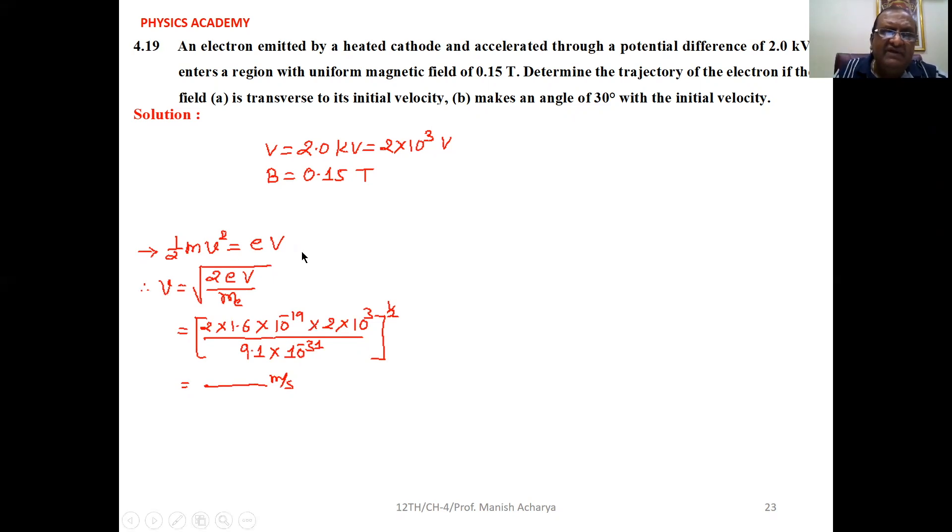In the second chapter we studied when any charge Q is accelerated with potential difference V volts, then energy gained by it is QV. Here the electron is accelerated, so energy gained by electron is eV, and that is in the form of kinetic energy.